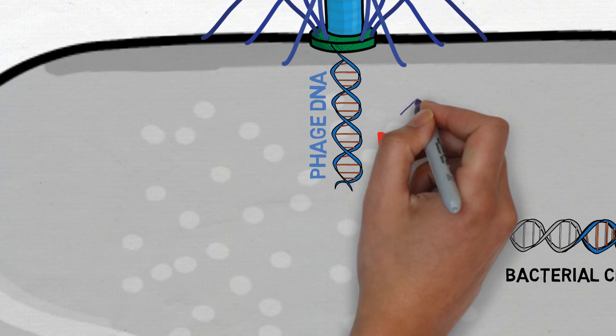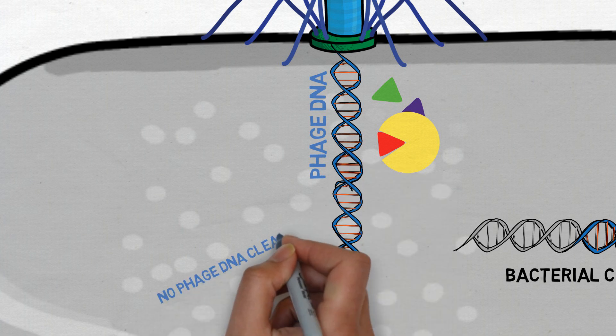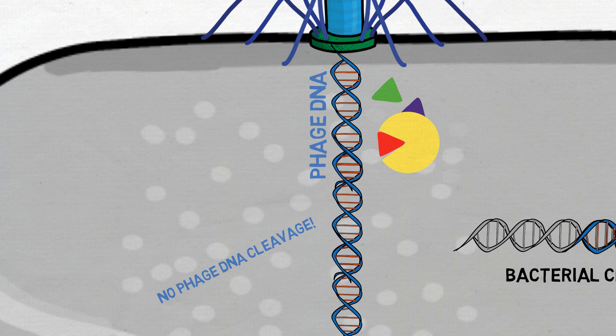In our study, we identified three phage proteins that block Cas9's ability to cut DNA by binding directly to the Cas9 complex. This anti-CRISPR strategy protects the phage from destruction by the bacterial immune system.